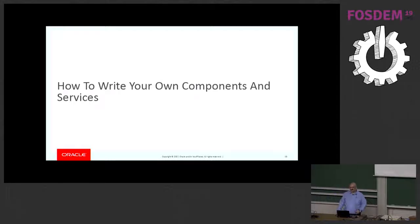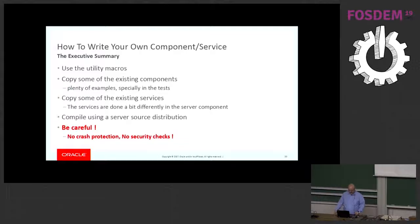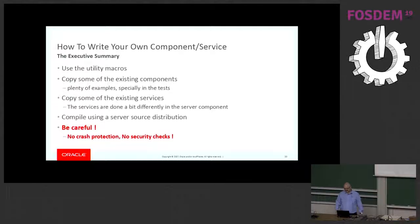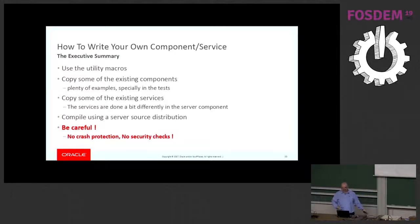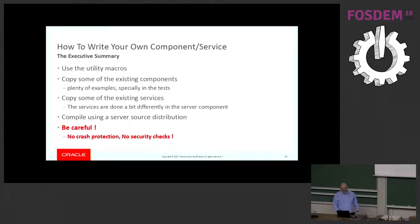How to write your own components and services — I'll give you the executive summary given the time I have. I have a bunch of utility macros; if you've ever written a plugin, it's not very different. You can copy some of the existing components — plenty of examples, especially in the tests, as we add tests for pretty much everything we do. Also copy the existing service definitions, because once you have your component, you need to define certain services it provides to other components. There's also a Doxygen section in the documentation. Unlike plugins, you need to compile it using the server source distribution — we are not yet at a point where you can take the binary and compile against it. Be careful: because components run in the server process, there are no boundaries, no checks and balances, so apply care.